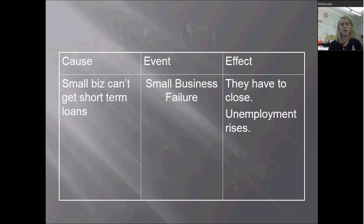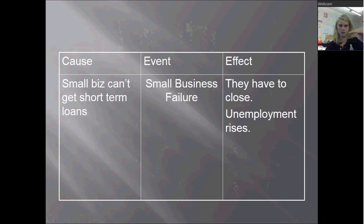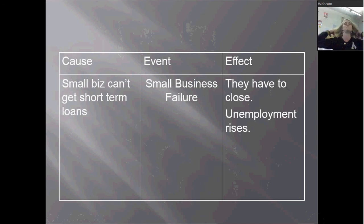We'll talk more about the effects of these causes in class, but this is a brief overview of how the Great Depression starts. You can see the snowball effect: low crop prices lead to an increase in the income gap, which leads to rising inventories, which leads to the trade imbalance, which leads to the stock market crash. One leads to the other. I'll see you guys in class as we talk more about the Great Depression. Bye.